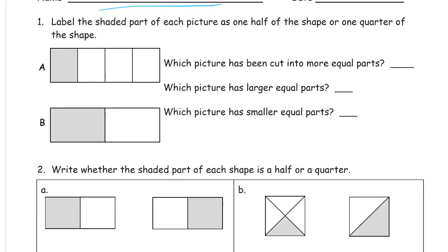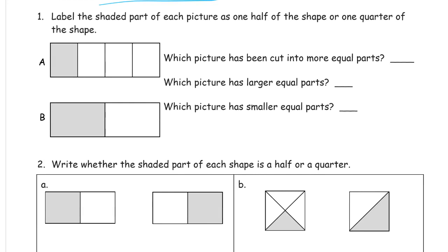Label the shaded part of each picture as one half of the shape or one quarter of the shape. So they're already shaded in.